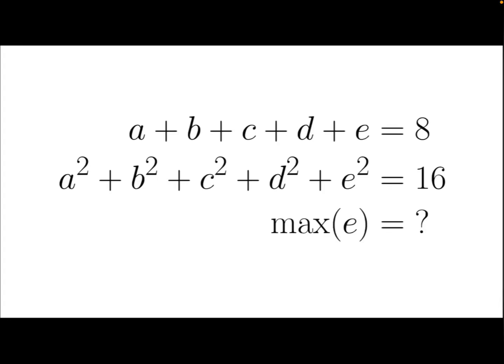Let's take a look at this problem. We have 5 real numbers A, B, C, D, and E, with sum equal to 8, and the sum of squares equal to 16. Find the maximum value of E.